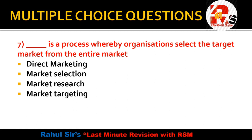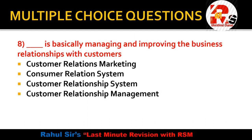Question number 7: The process whereby organizations select the target market from the entire market — is called Direct marketing, Market selection, Market research, or Market targeting? This is called Market targeting.